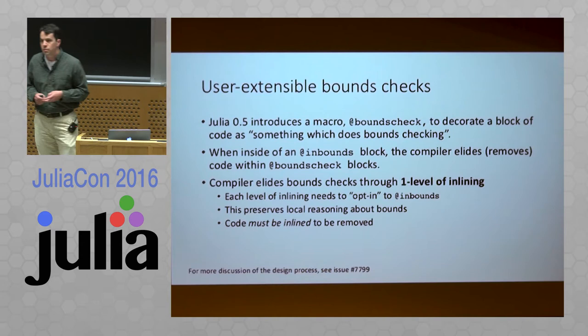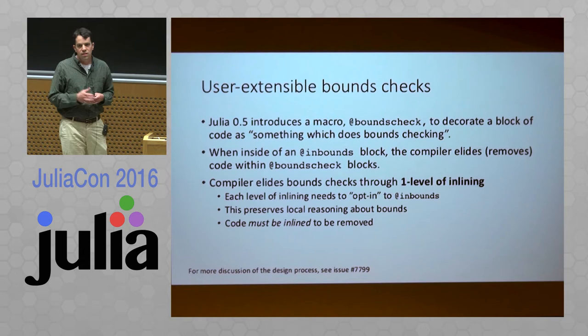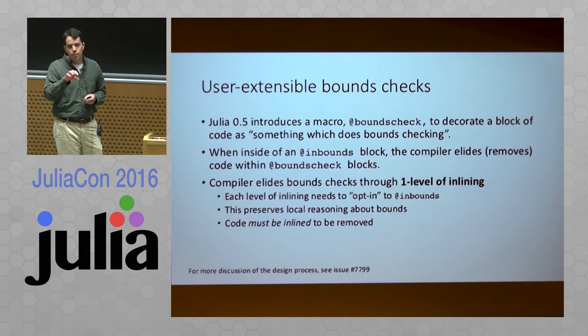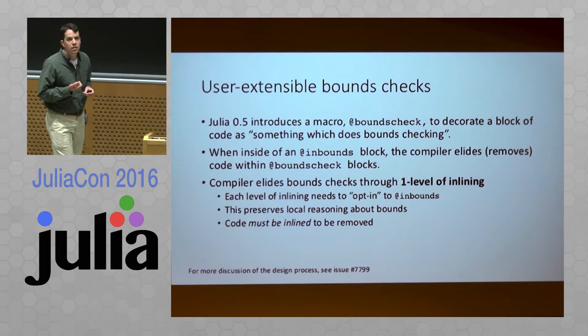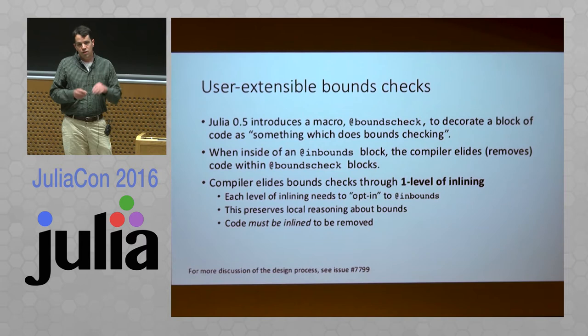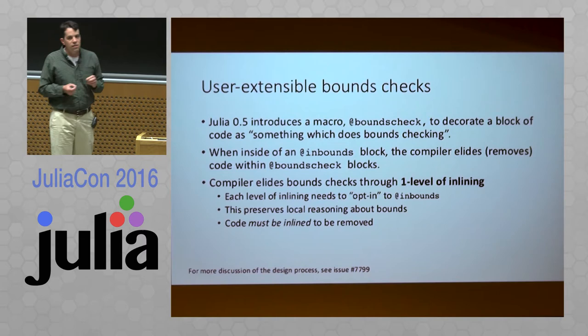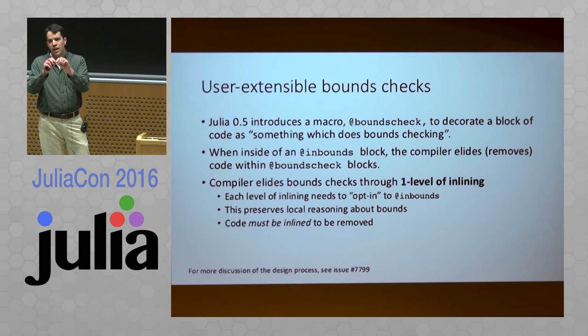The design we came up with for user-extensible bounds check elimination has a few ingredients. One is a new macro called @boundscheck, used to decorate a block of code as something which does bounds checking. When the compiler sees such a block inside another block labeled with the @inbounds macro, it knows it can elide or remove that block of code. This has an interesting interaction with inlining — in a call chain, you could have one block several layers deep in an inlining tree from another block that has @inbounds, creating a very non-local interaction. That seemed bad.